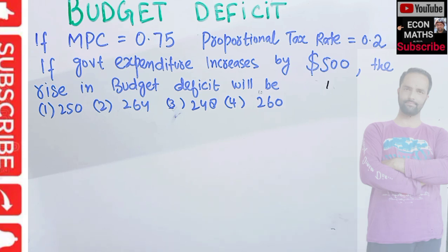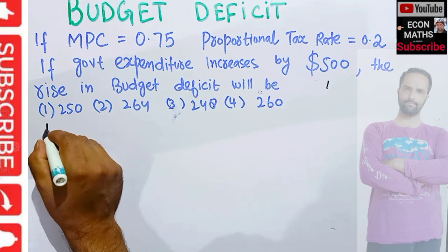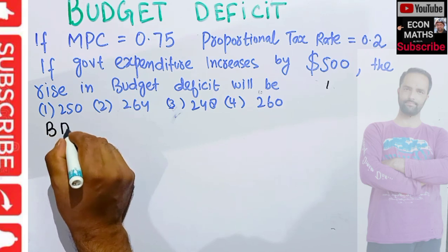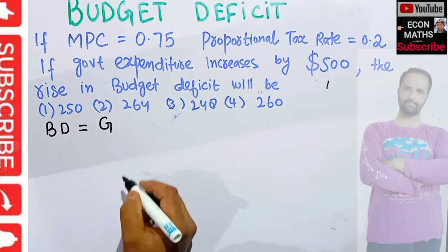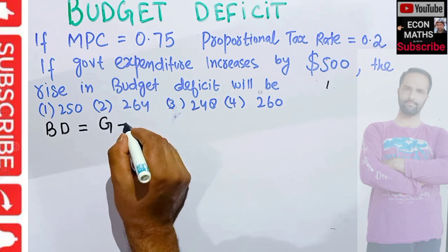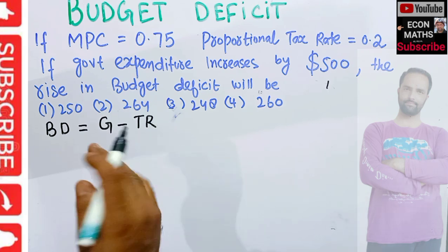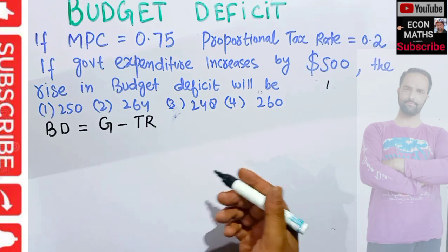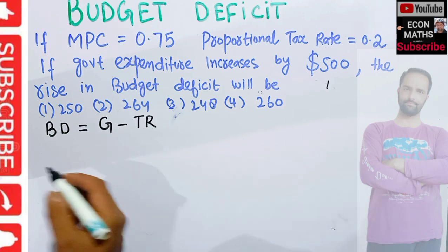First we need to find out what exactly is meant by budget deficit. Budget deficit occurs whenever government expenditure is greater than tax revenue. When our expenditure is greater than our revenue, that is tax revenue, there will be a budget deficit.